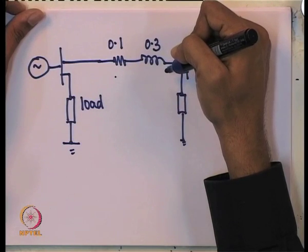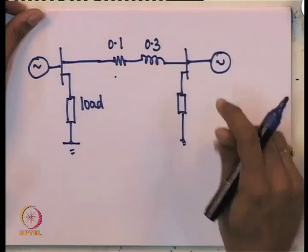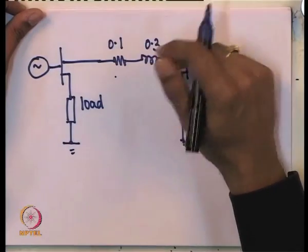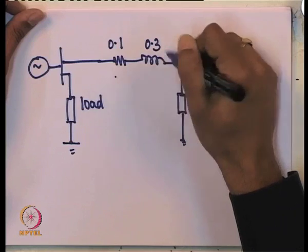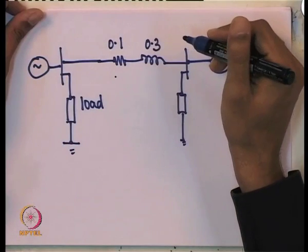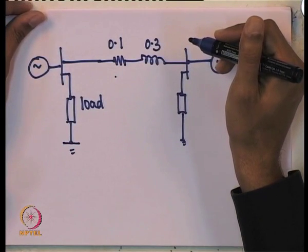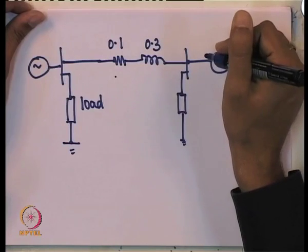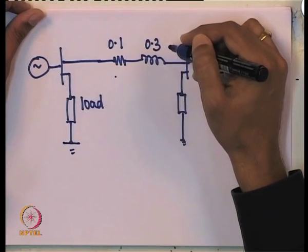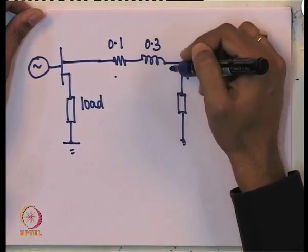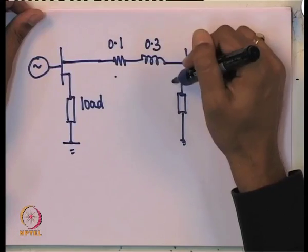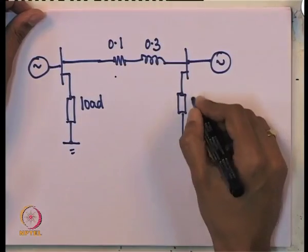In our discussion of transmission lines we have seen that a lumped representation, even with a dynamical model using lumped inductance, is likely to give reasonably correct results for low-frequency phenomena. But if you are studying switching and lightning transients, this is not an acceptable model. In fact, today we may even neglect the dynamics associated with this reactance.